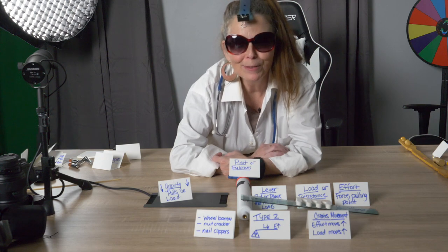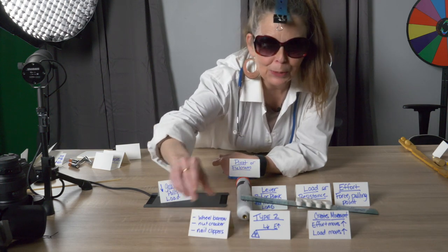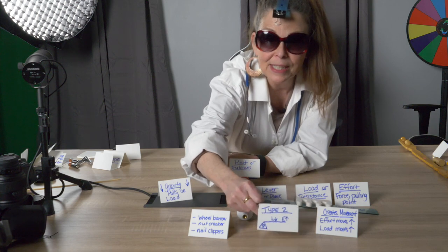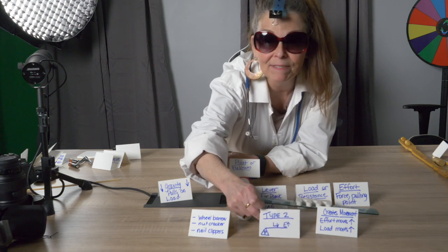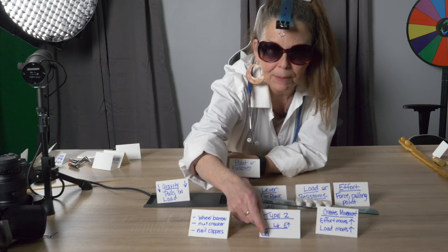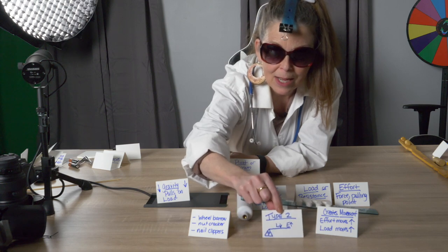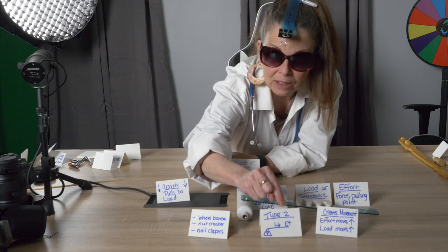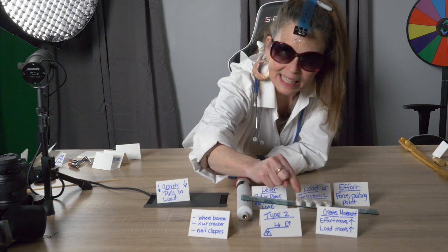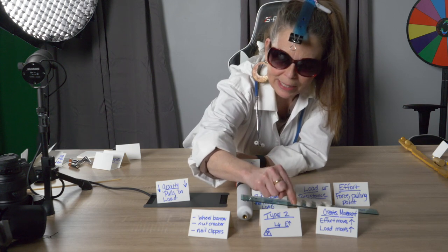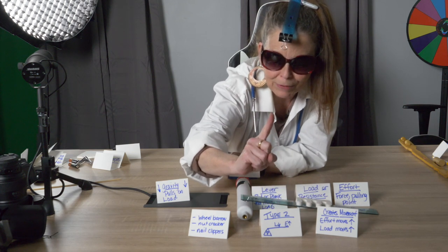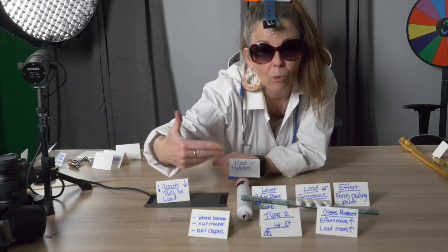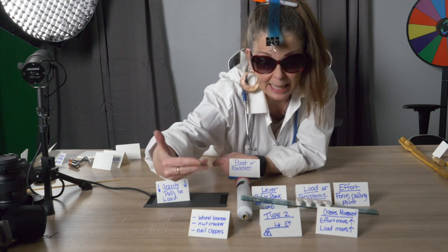The first kind of lever was fun. Let's make another kind — this is called a class two lever. In this one, we have the pivot point at one end, the load we're lifting in the middle, and the effort goes on the other end.